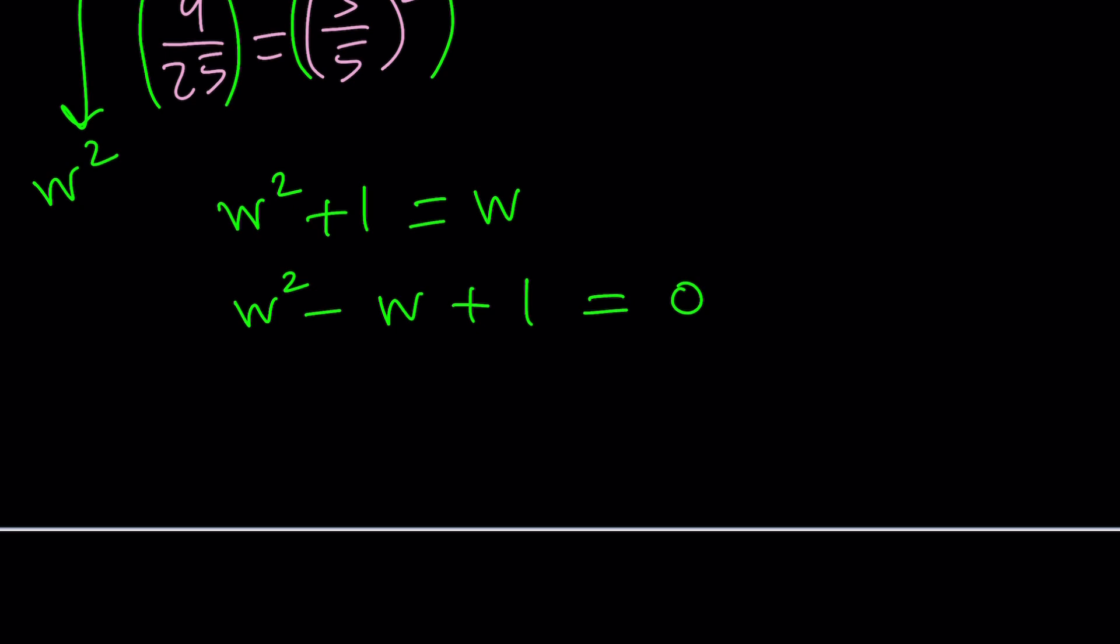How do you solve it? Quadratic formula, whatever you like to use, negative B plus minus the square root of B squared, 1 minus 4, which is negative 3. And of course, you can write it as 1 plus minus root 3i divided by 2. If you write this as 1 half plus minus root 3 over 2i, you'll probably recognize, hey, these represent cosine and sine of some angles, special angle